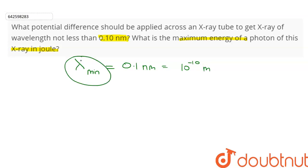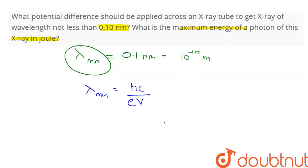λ_min is also called the cutoff wavelength, and the formula for cutoff wavelength is λ_min = hc / eV. After rearranging, we get V = hc / (e × λ_min).